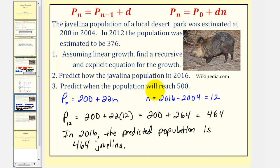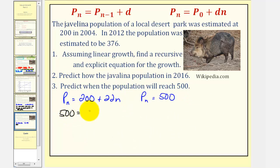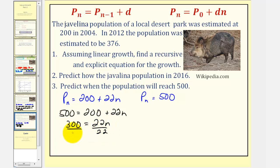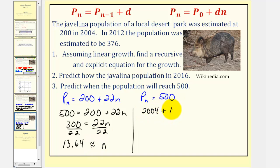For part three, we want to predict when the population will reach 500. We'll use the explicit equation and substitute 500 for p sub n, then solve for n. So we solve: 500 equals 200 plus 22n. Subtracting 200 from both sides gives 300 equals 22n. Dividing both sides by 22, we get n approximately equal to 13.64. Since n is the number of years after 2004, we get 2004 plus 13.64, which is 2017.64. Rounding to the nearest year, the population will reach 500 in 2018.